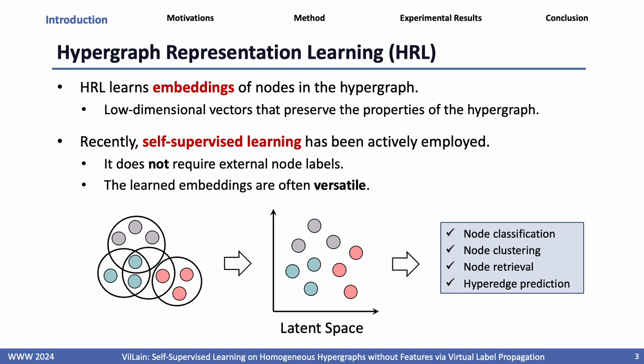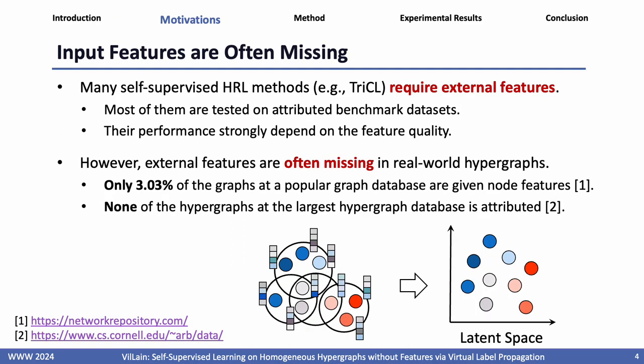HRL learns embeddings, or low-dimensional vectors of nodes in the hypergraph. Recently, self-supervised learning has been actively employed due to its advantages: it does not require external node labels, and the learned embeddings are often versatile, meaning they can be used in various downstream tasks. However, many self-supervised HRL methods require external features as input, so most of them are tested on attributed benchmark datasets, and their performance strongly depends on the feature quality.